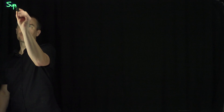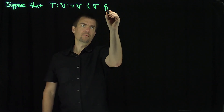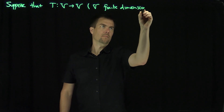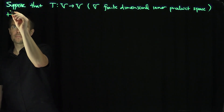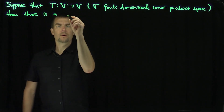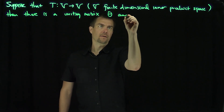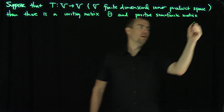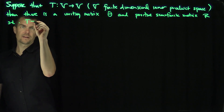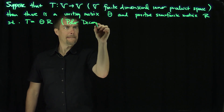Hello, students. In this video, we'll discuss the polar decomposition of an operator from a vector space to itself. Let's suppose that T maps a finite-dimensional inner product space into itself. Then there is a unitary matrix θ and a positive semi-definite matrix R such that T is equal to θR. They call this the polar decomposition of T.